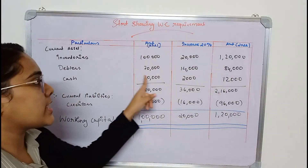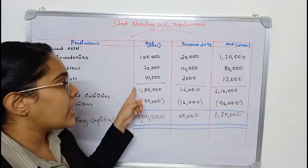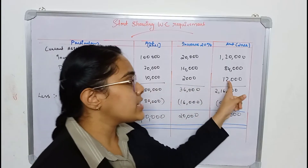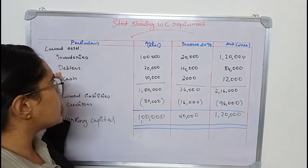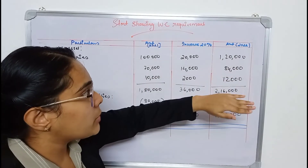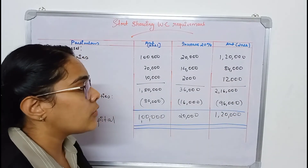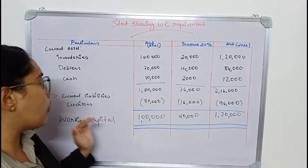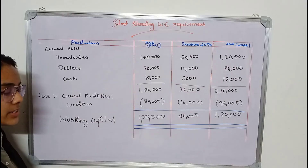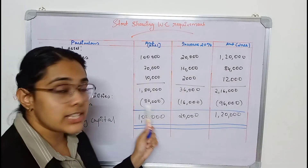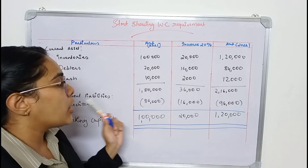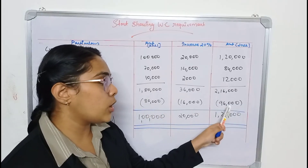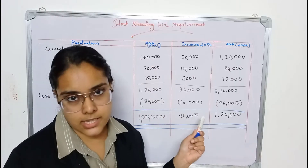Cash was 10,000 in the previous year. 20% of 10,000 is 2,000, giving a current year cash value of 12,000. Total current assets: 1,20,000 plus 84,000 plus 12,000 equals 2,16,000. For current liabilities, creditors were 80,000 in the previous year. 20% of 80,000 is 16,000, giving a current year creditors figure of 96,000.